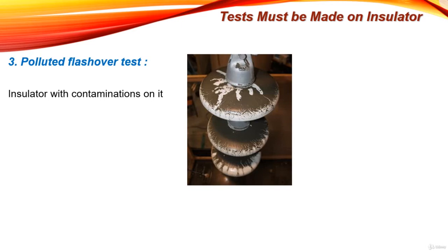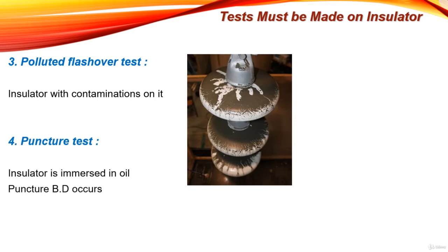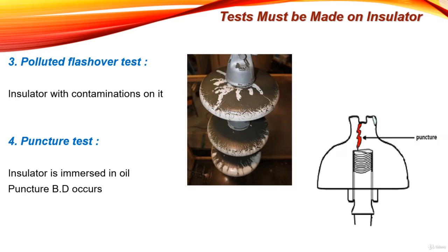The fourth test is the puncture test. This test is done by submerging the insulator in oil to avoid flash-over, as the flash-over voltage of oil is much higher than that of air. Then, voltage is increased gradually until breakdown occurs inside the insulator itself. This breakdown that occurs inside the insulator itself is called puncture breakdown — not flash-over. Flash-over occurs on the surface of the insulator, so in this test we submerge the insulator in oil to avoid it and allow puncture breakdown to occur.